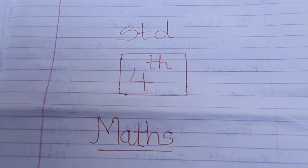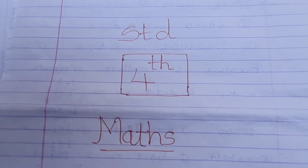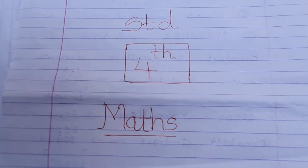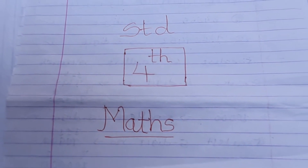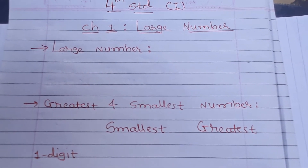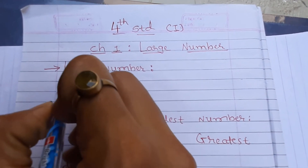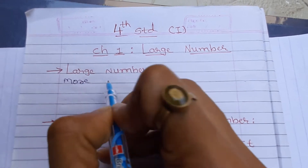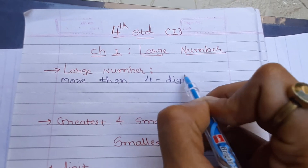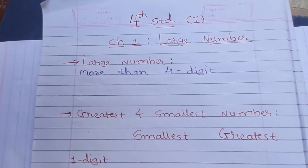Hello dear students, hope you all are well. Today we will continue online and start with Chapter 1: Large Numbers. A large number is a number which has more than four digits. So if any number has more than four digits, it is called a large number.